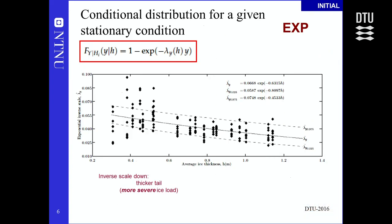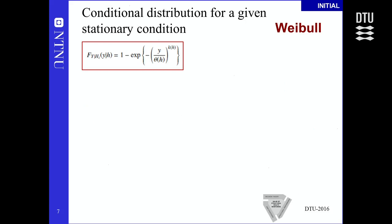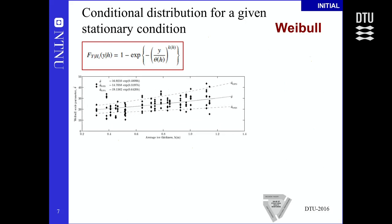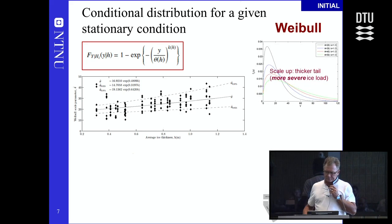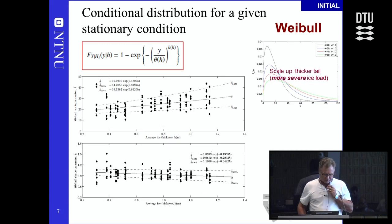With a single exponential model, the lambda intensity parameter depends on ice thickness and can be plotted as a function of ice thickness. There is large scatter but a decreasing trend — the thicker the ice, the smaller the lambda parameter. The Weibull distribution is also widely applied for ice peak loading. As a two-parameter model with scale and shape parameters k and theta, it provides more flexibility to fit data and also shows some trend with ice thickness.